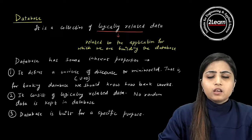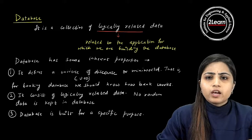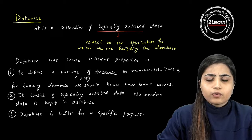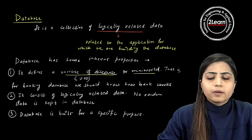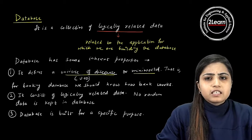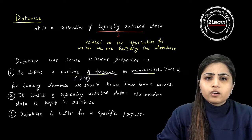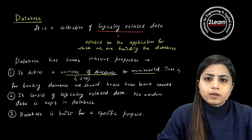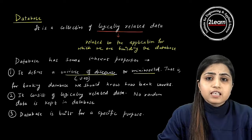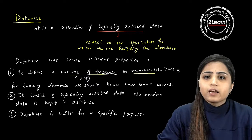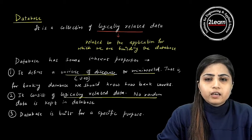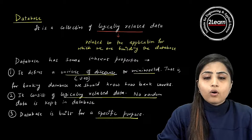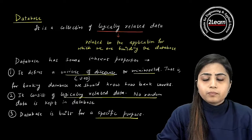These are the three properties that every database satisfies by default. First, it defines a universe of discourse or mini world — for a particular real-world application, we create the database and do not include all features, which is why we call it mini world. Second, it consists of only logically related data with no random data. Third, it is built for a specific purpose. This completes the definition and properties of a database.